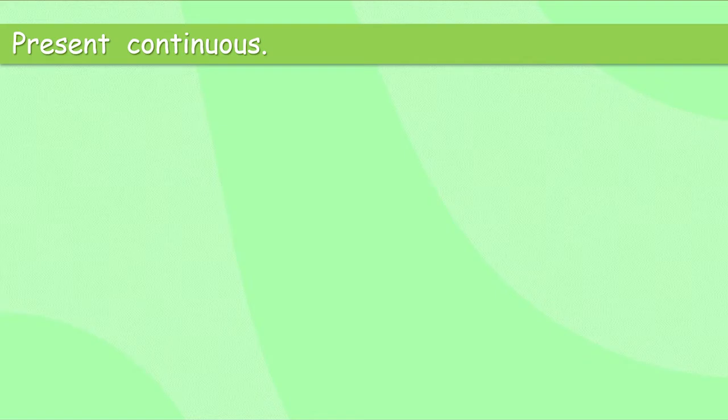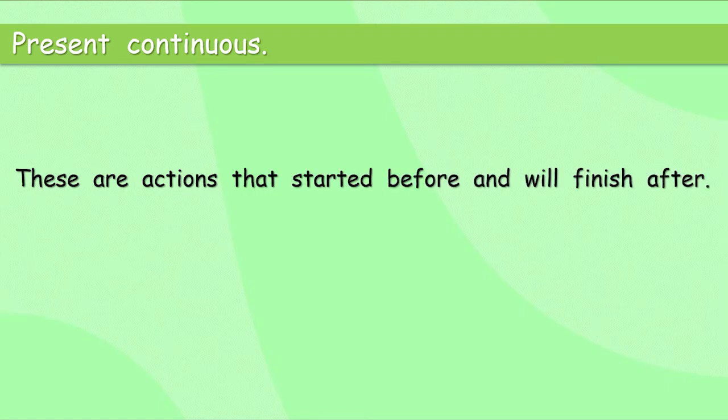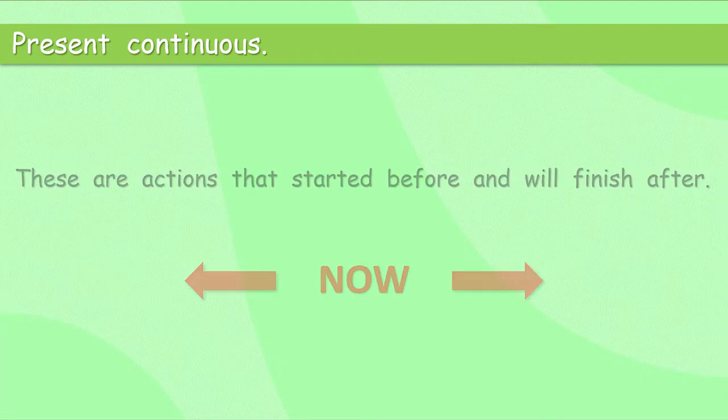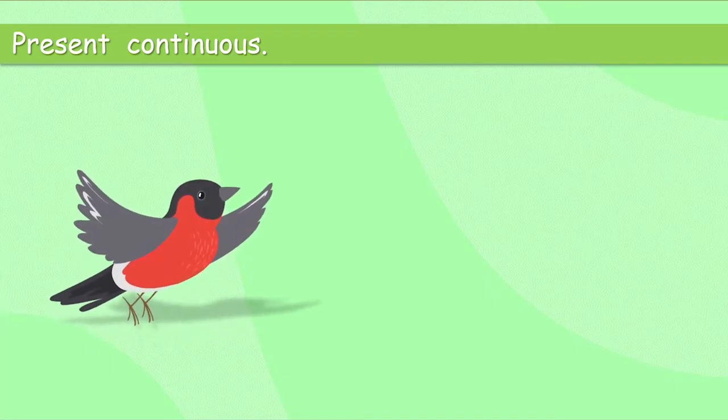Present continuous. Now that is a verb tense. So we use present continuous when these are actions that started before and will finish after. So here's now. Now, and these actions are before now and after now. And that verb tense is called present continuous. So what is the bird doing? The bird is flying. Flying. Can you see? We change the verb from fly to fly-ing. We add ing.